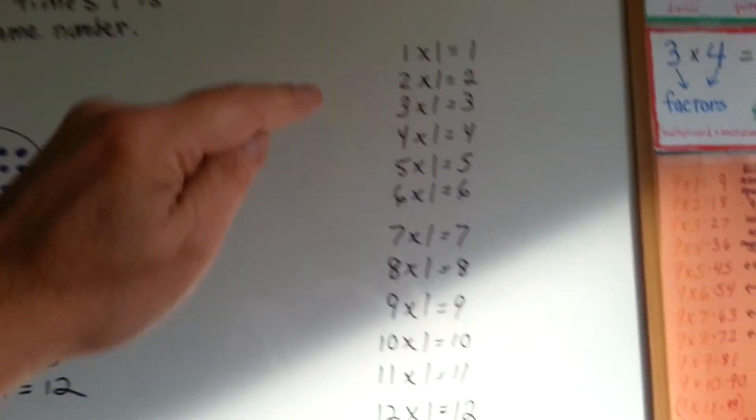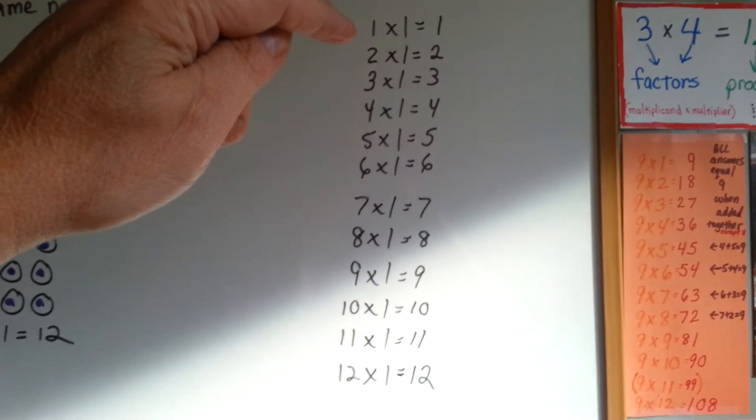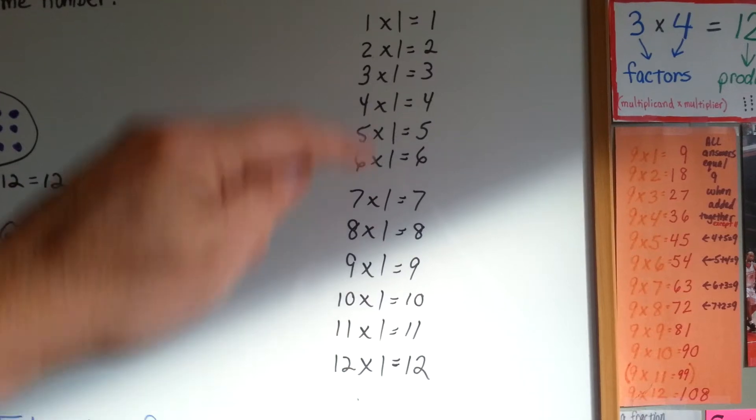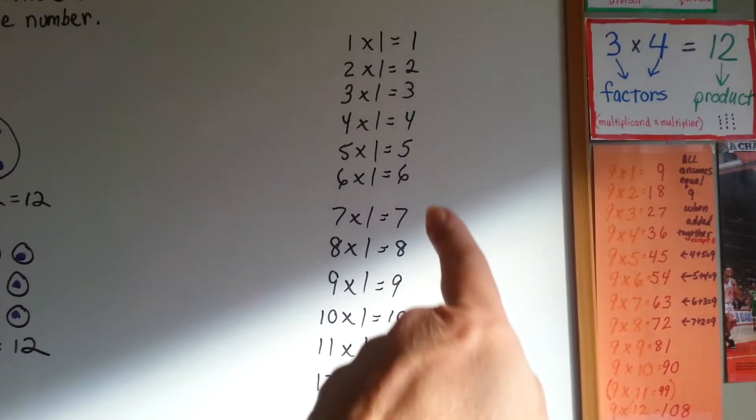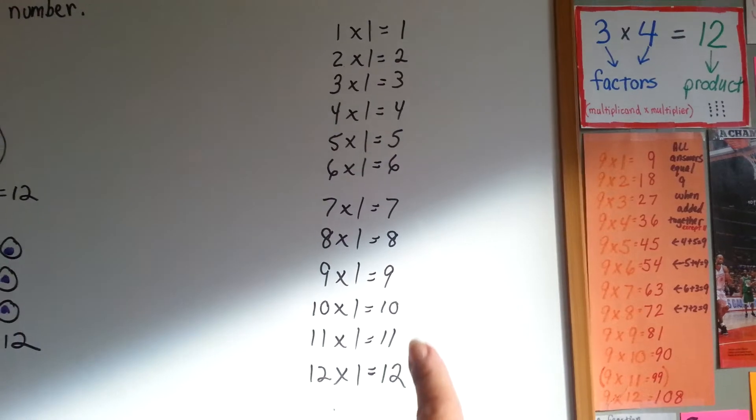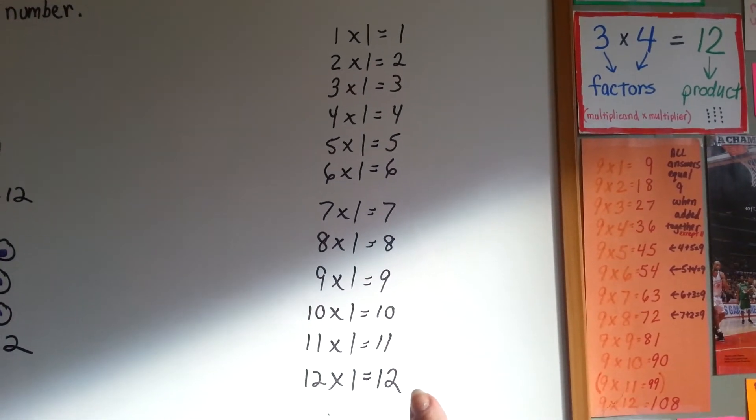So when you're looking at the one times table, any number multiplied by one stays who it is. It keeps its identity. It stays itself.